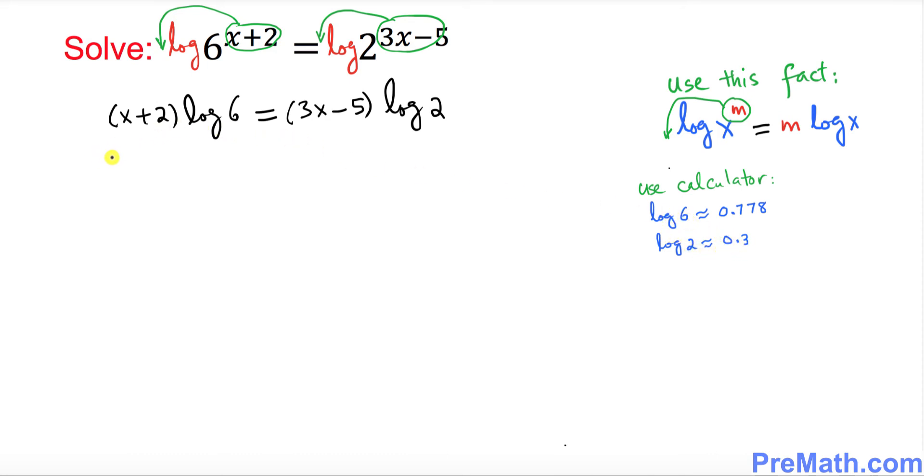Let's plug it in and see what happens. (x+2) times log of 6 is 0.778 equals (3x-5) times 0.3.